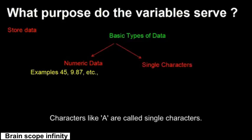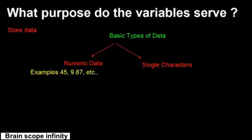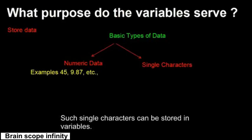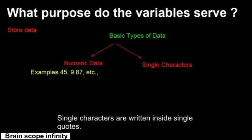Characters like A are called single characters. Such single characters can be stored in variables. Single characters are written inside single quotes.